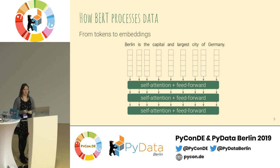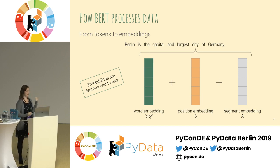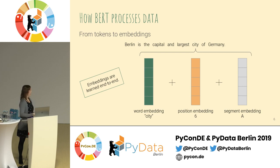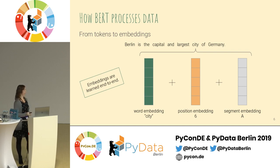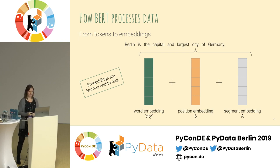Each embedding consists of three components. The first component is a word embedding — for example, there's an embedding for the word 'city', and 'city' in any other occurrence in the text would get the same word embedding. Second, there's a position embedding — 'city' in this input sequence is token number six, and token number six in any other input sequence would get the same position embedding. BERT needs position embeddings because it's based on the transformer architecture, which has no concept of word order incorporated by design. A recurrent network reads word by word, but the transformer needs position embeddings to make sense of the order.